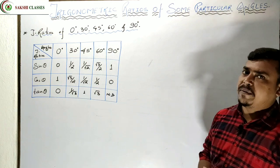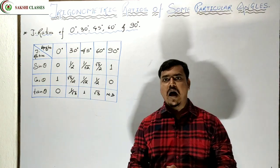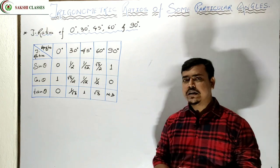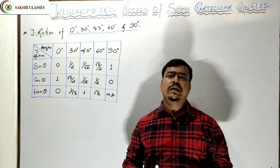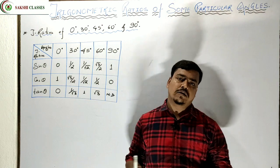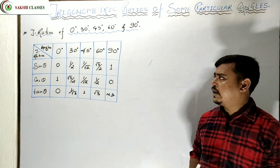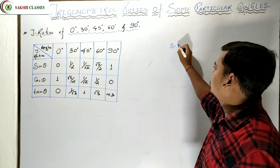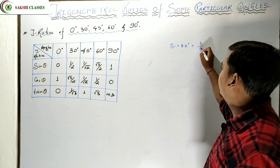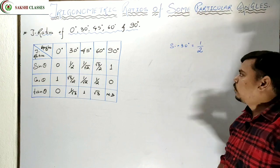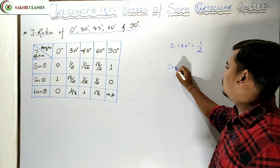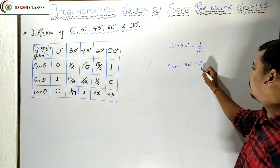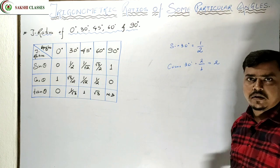Now the question is — you know that the trigonometric ratio has 6 functions, so I have to teach you the remaining three, which are the inverse of the first three. Cosec is the inverse of sine, sec is the inverse of cos, and cot is the inverse of tan. So let's talk about sin 30°. Sin 30° value is 1/2, so cosec 30° is the inverse — that is 2/1, which equals 2.